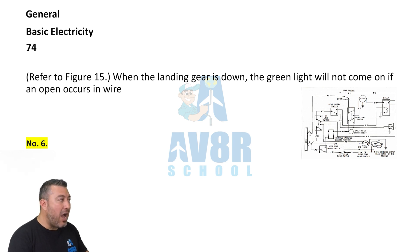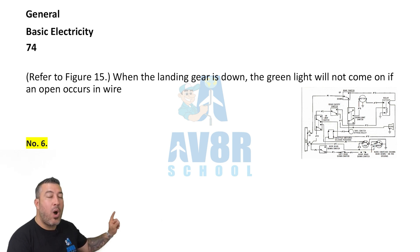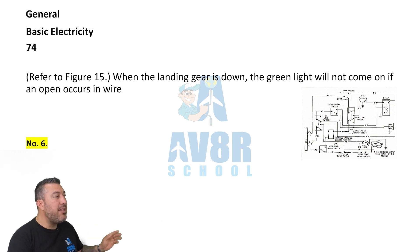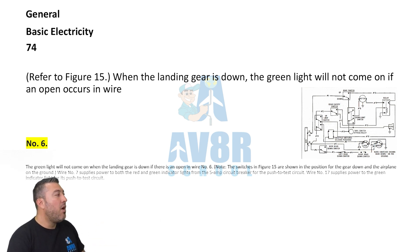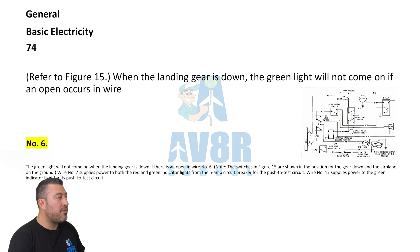Question 74, figure 15. When the landing gear is down, the green light will not come on if an open occurs on wire number six.